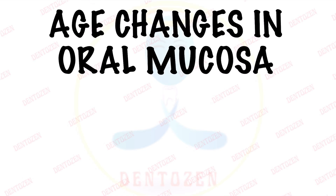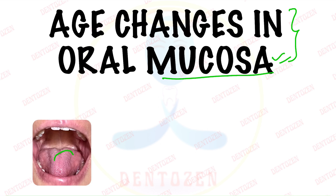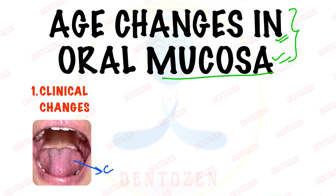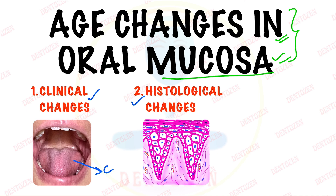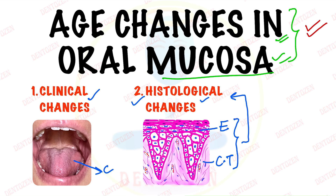Hi everyone, welcome to Tenderson. Today we are going to talk about age changes in oral mucosa. Oral mucosa is the moist lining of our mouth. With aging, changes occur in this lining — those seen clinically inside the mouth are called clinical changes, and those observed microscopically are called histological changes. Histologically, mucosa is made up of epithelium and connective tissue, and changes can be seen within both. Age changes in oral mucosa can thus be described under two headings: clinical changes and histological changes — an important theory exam question.